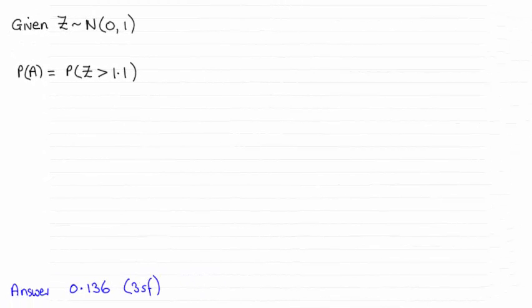Hi there. Now for this first question, we had to work out the probability of A, which was the event the probability that Z was greater than 1.1. And you can see the answer turns out to be 0.136 to three significant figures.